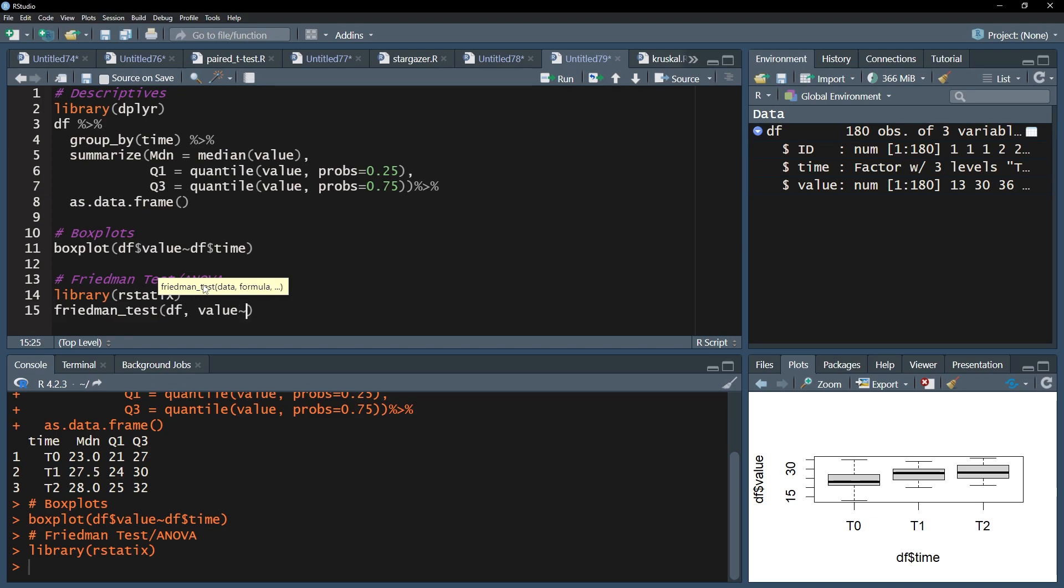Follow this up with tilt, the small wave symbol, and then your time variable. Finally, the id variable has to be added. You have to use a vertical line after your formula. You can usually find it between backspace and enter on your keyboard. My id variable is simply called id and matches the measurements to individuals in long format data.